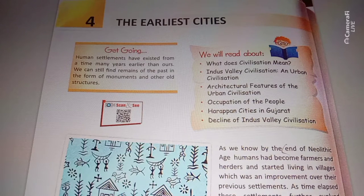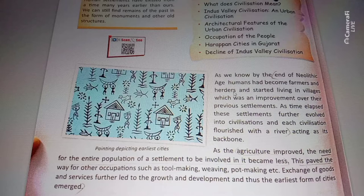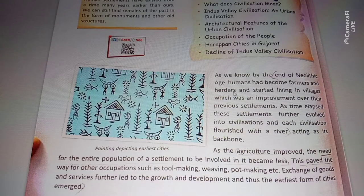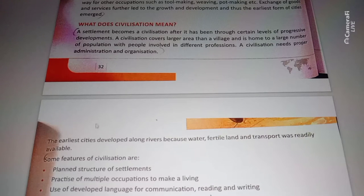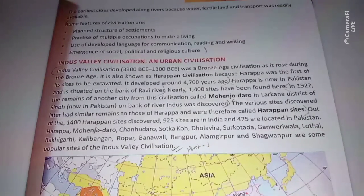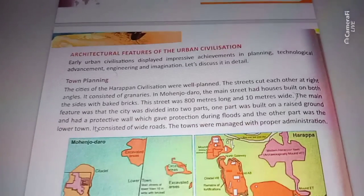Welcome to the ANPS channel students. Today I am going to start the architectural structure and features of the urban civilization. In this Part 2 we will get the total civilization town planning. Before this, we have to recapitulate our previous knowledge — in our previous video we talked about what civilization means, some features of civilizations, this valley civilization which is an urban civilization, and the particular sites found through excavation. We also discussed the map portion.